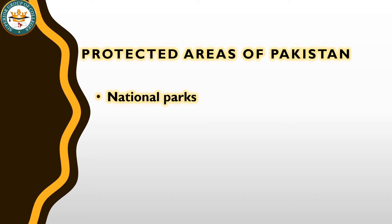Last lecture, we talked about the protected areas of Pakistan. We have seen that there are three types of protected areas in Pakistan: national parks, wildlife sanctuaries and game reserves. Last lecture we discussed about five national parks. This lecture is our second part of lecture number 9, and we will discuss the rest of the national parks.